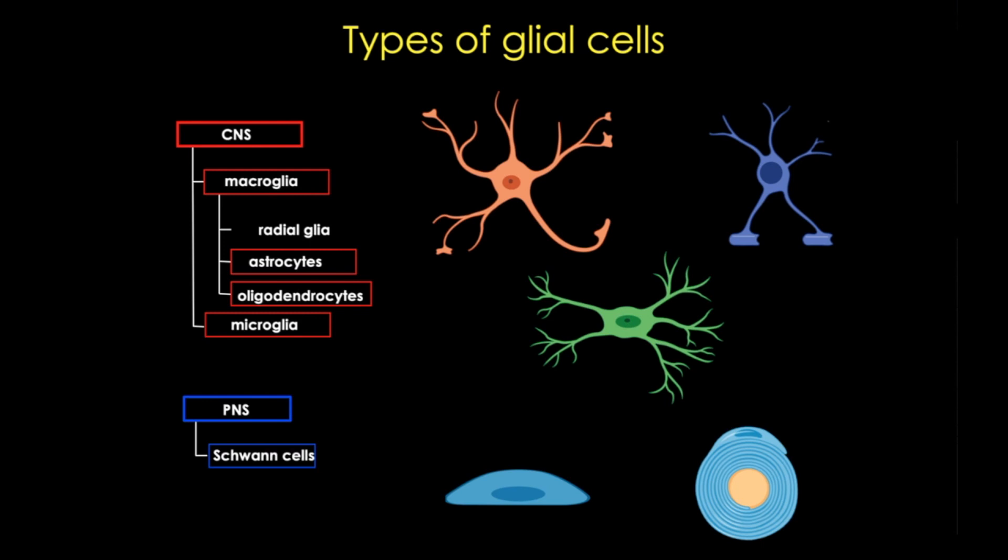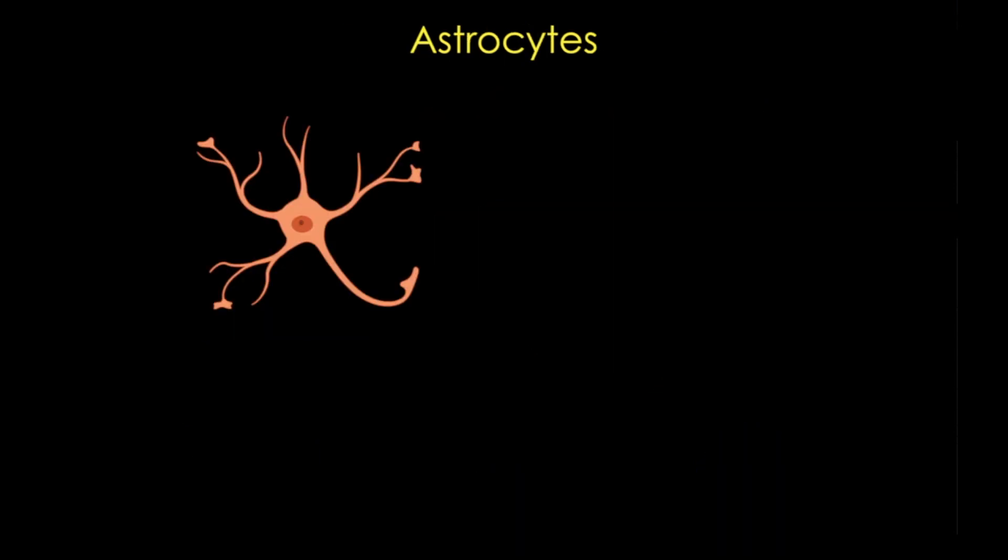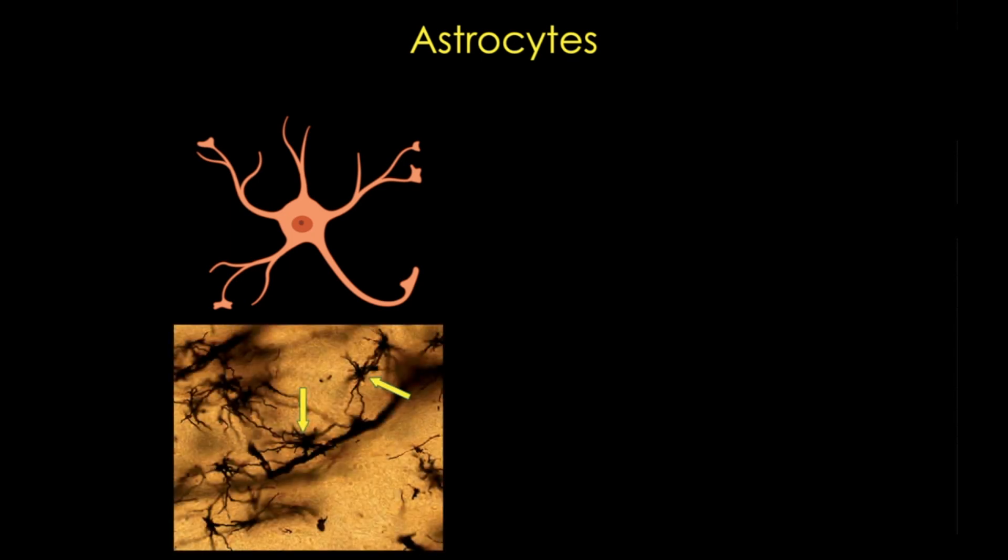First, we have the astrocyte, which is the most numerous glial cell in the CNS. It's a star-shaped cell, which you can see here in this silver stain. It contains glial fibrillary acidic protein, or GFAP, and that marks an intermediate filament protein specifically in astrocytes.